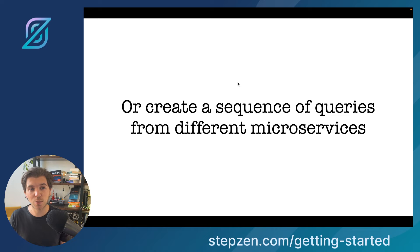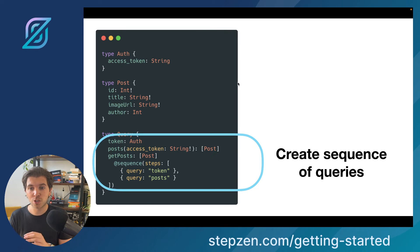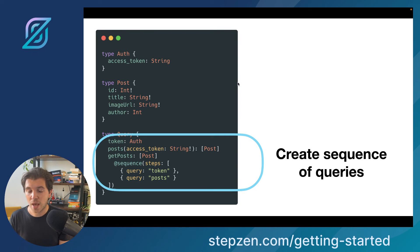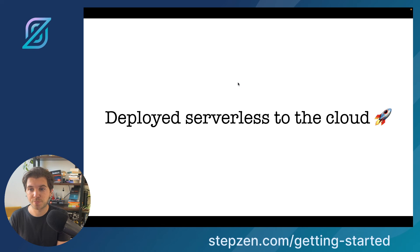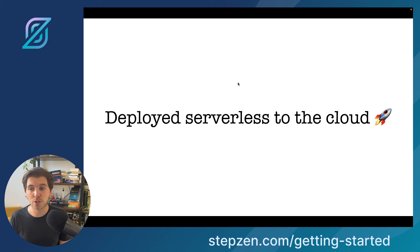You can also create a sequence of different queries. So let's say you first want to get an authentication token before you retrieve the posts from your microservices. With Stepset, you can do it using a custom directive called Add Sequence — you take a couple of steps to get all the data you need, and the output will be a GraphQL type again. This is all done declaratively, just by writing a GraphQL schema. And the best thing is it is deployed serverless to the cloud for you. You can also run it in your own Docker containers, but going serverless saves you time and money and makes it even easier to build and deploy GraphQL schemas.